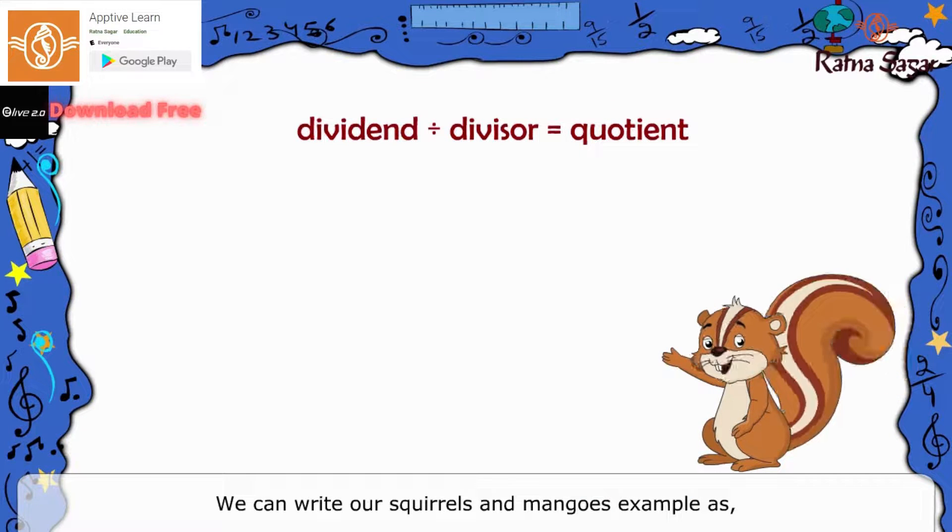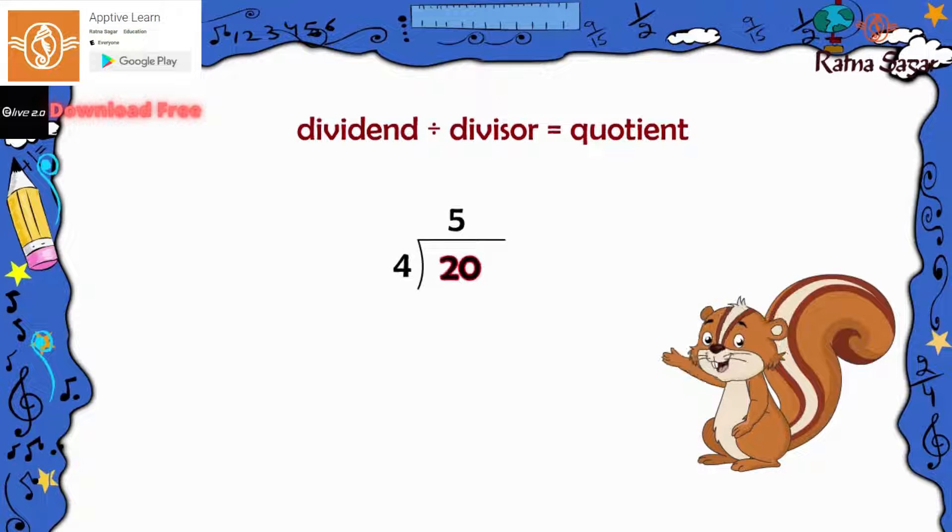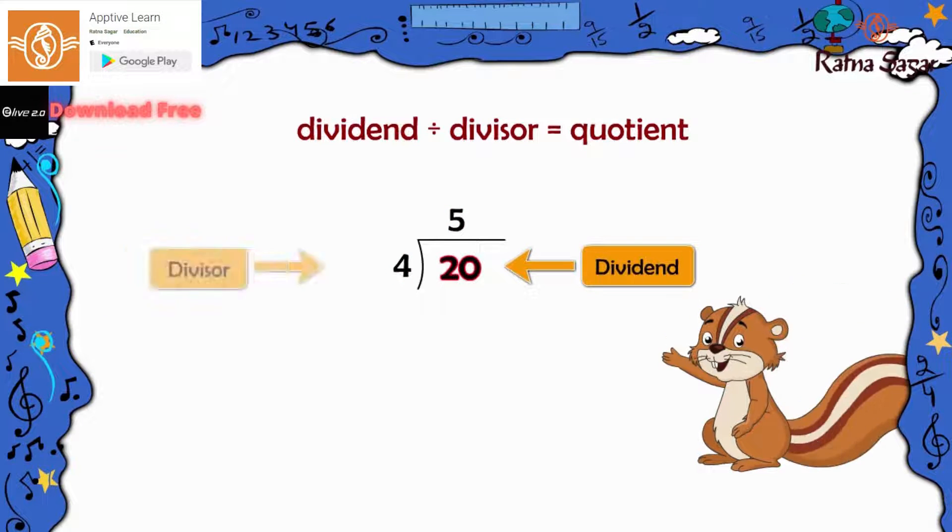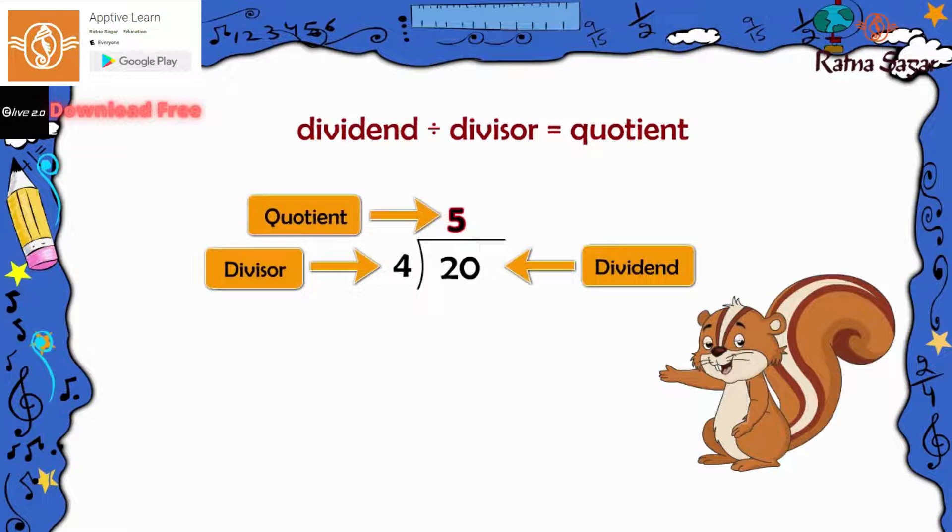We can write our squirrels and mangoes example as 20 divided by 4 is equal to 5, where 20 is the dividend, 4 is the divisor, and 5 is the quotient.